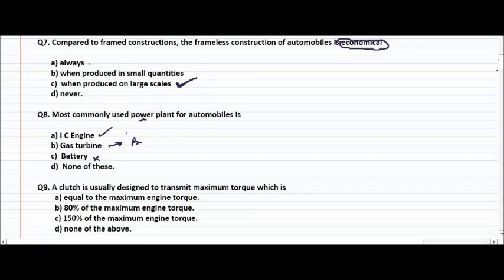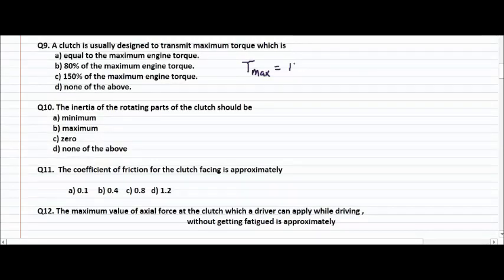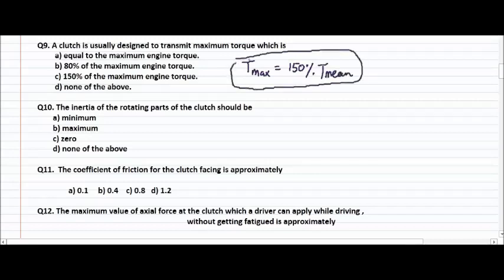Question number nine: a clutch is usually designed to transmit maximum torque, which is 150% of the maximum engine torque. Also, the inertia of rotating parts of the clutch should be minimum.